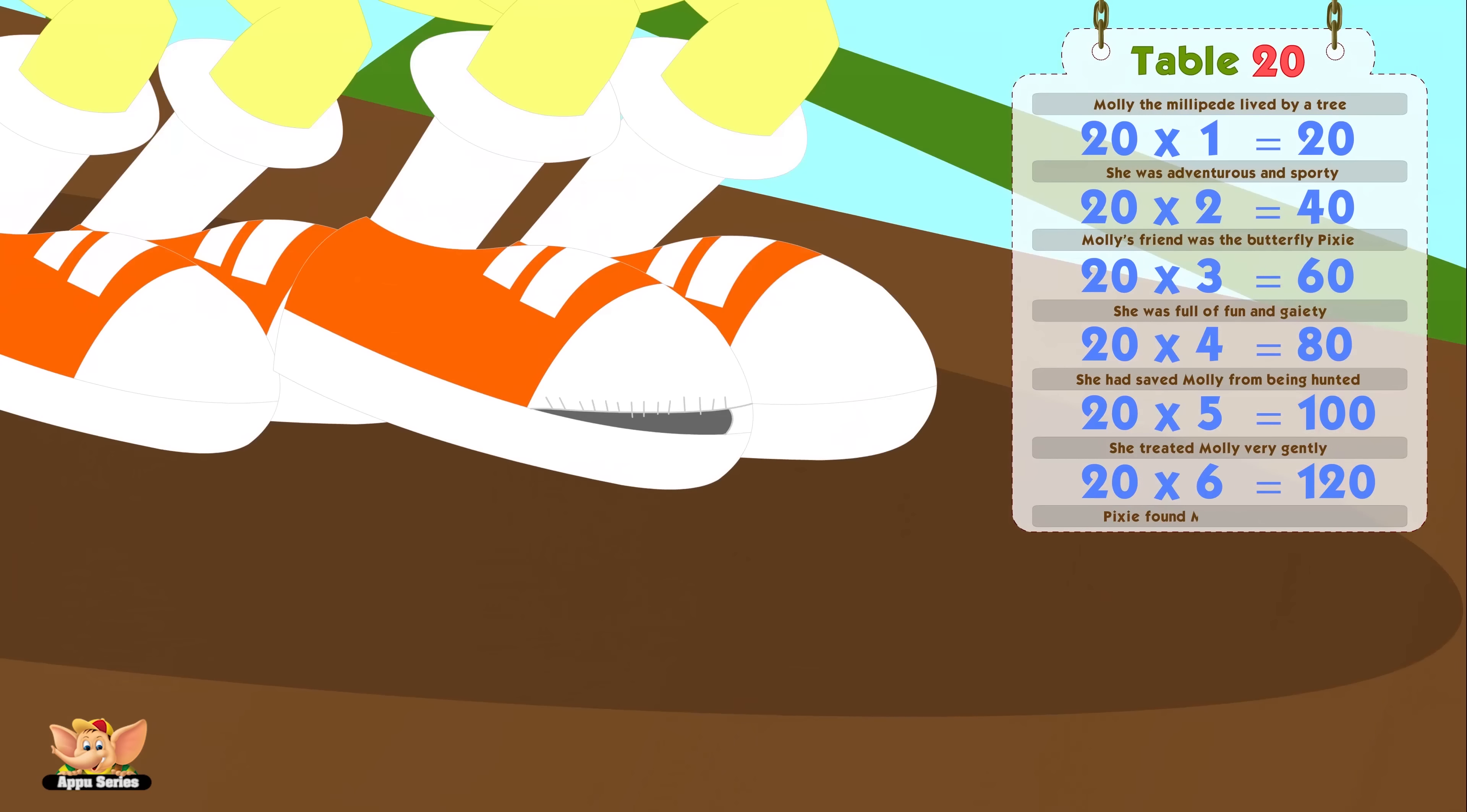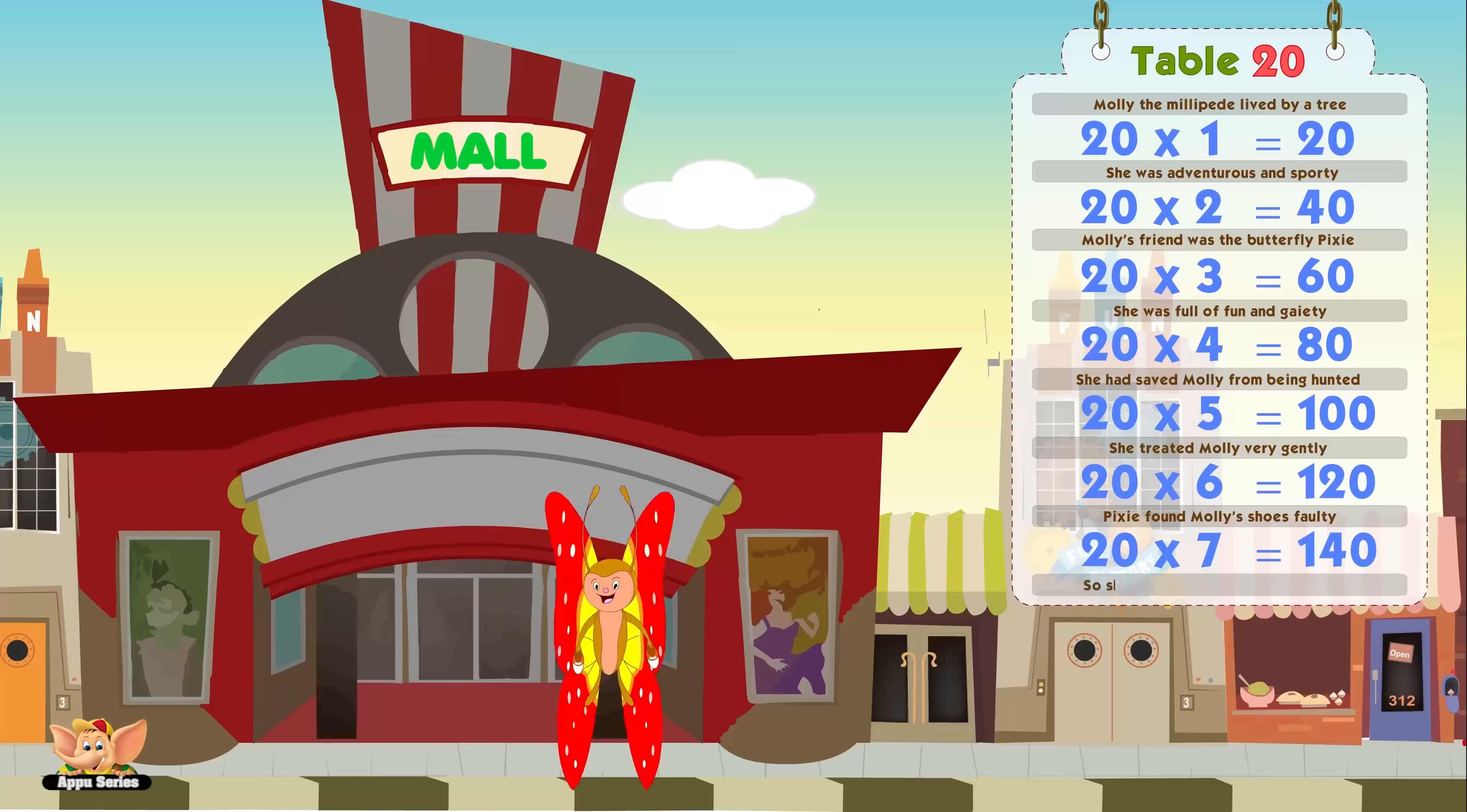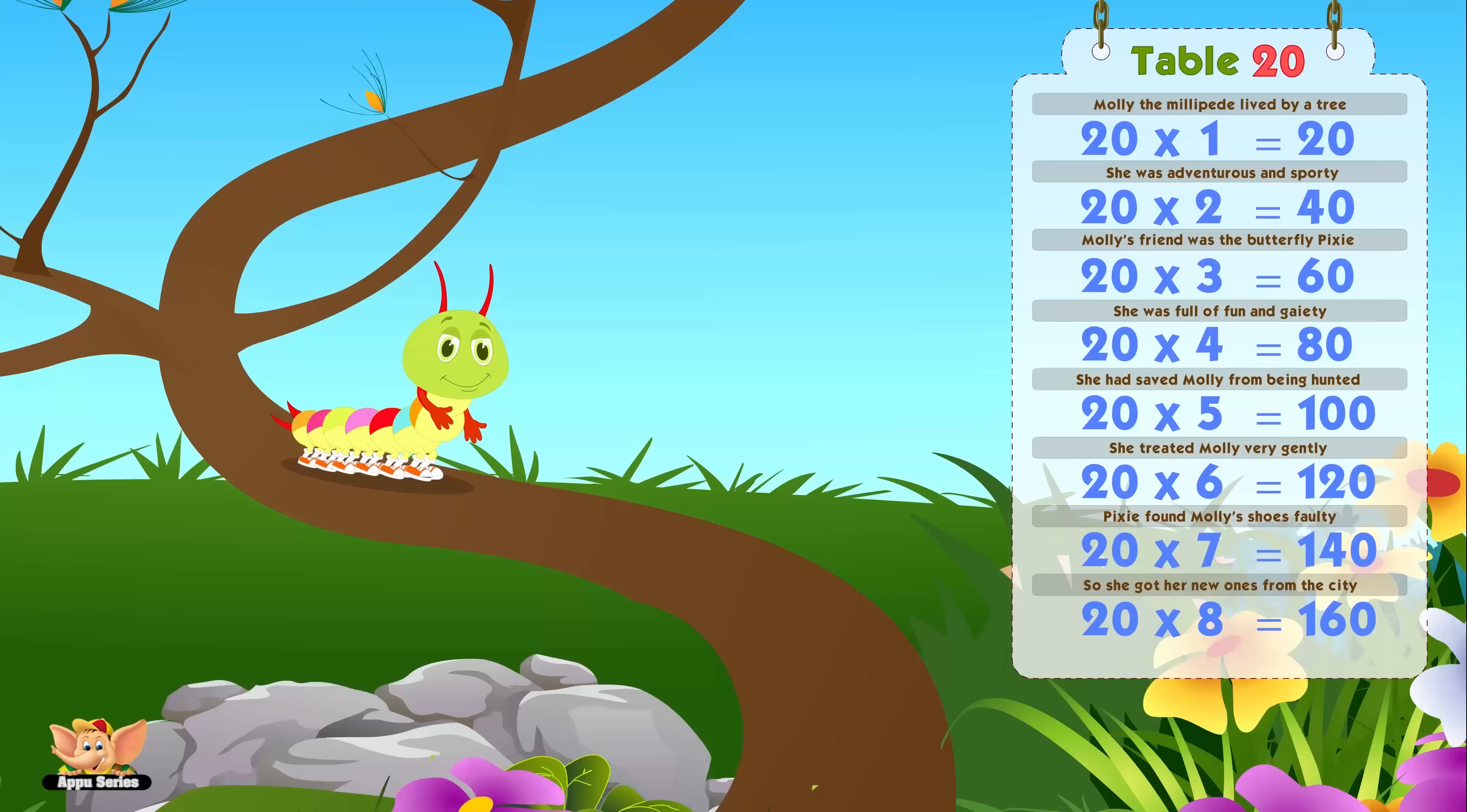Pixie found Molly's shoes worn, twenty sevens are one forty. So she got her new ones from the city. Twenty eights are one sixty.